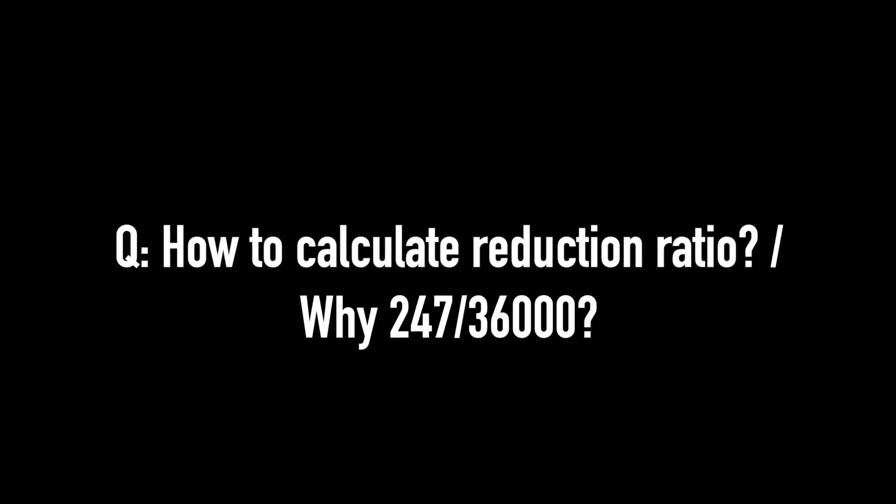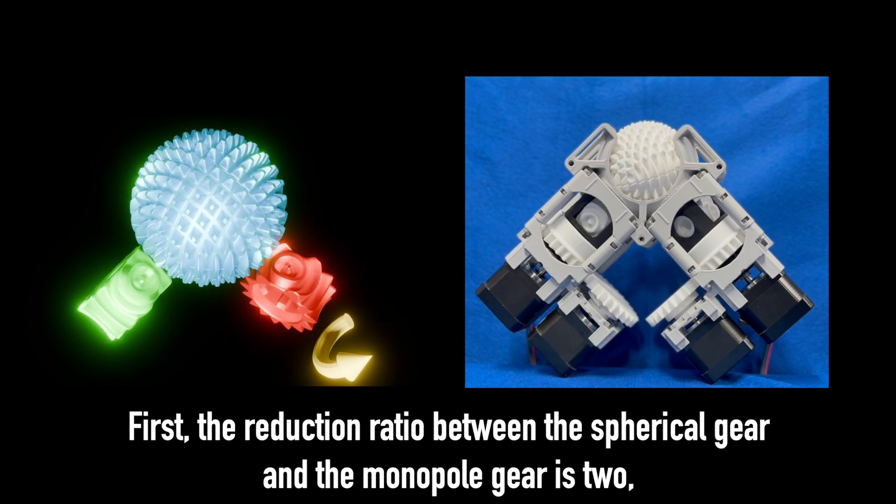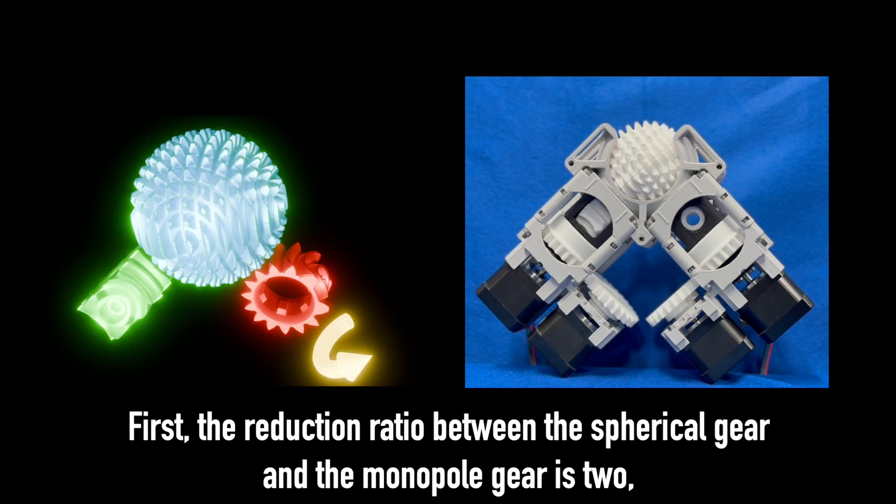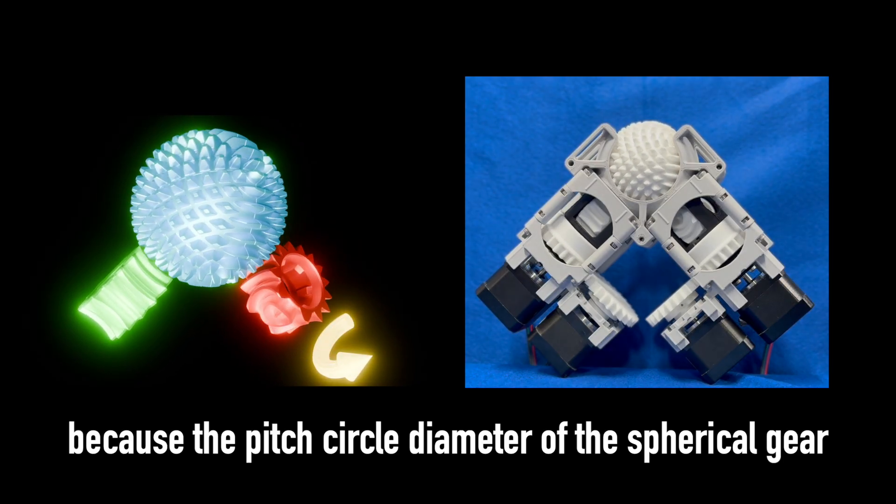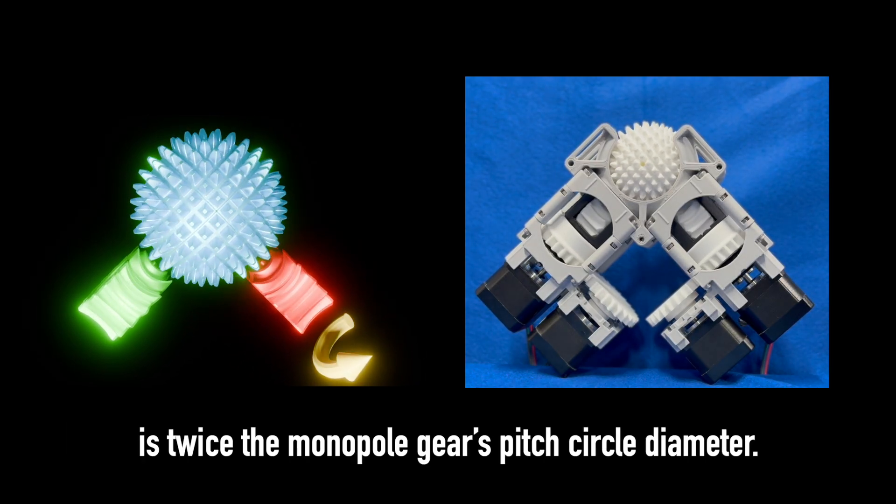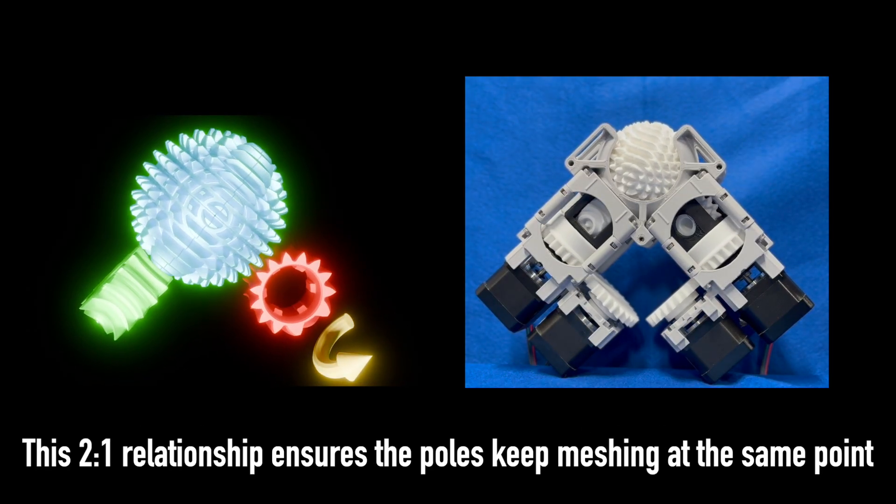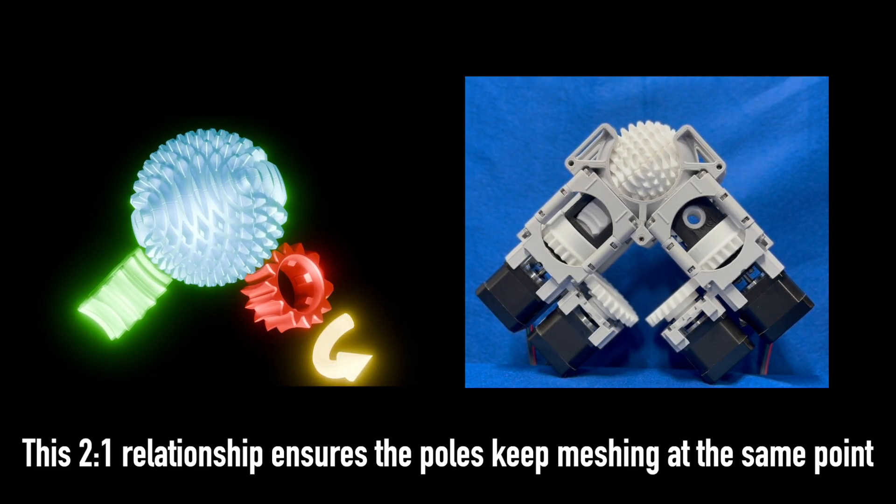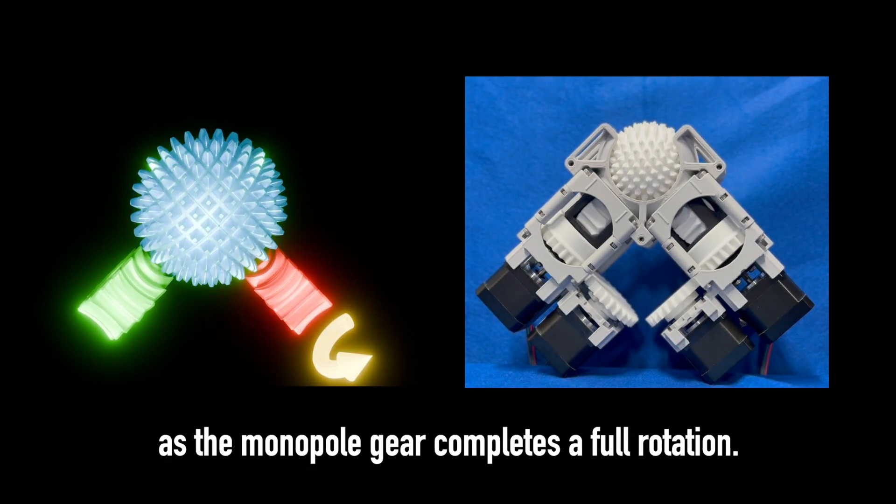How to calculate reduction ratio? Why 247 over 36,000? First, the reduction ratio between the spherical gear and the monopole gear is 2, because the pitch circle diameter of the spherical gear is twice the monopole gear's pitch circle diameter. This 2-to-1 relationship ensures the poles keep meshing at the same point as the monopole gear completes a full rotation.